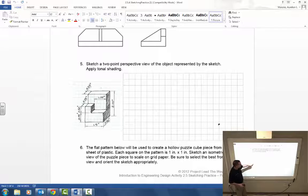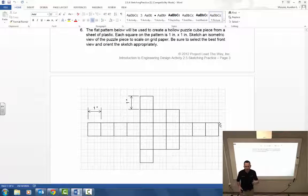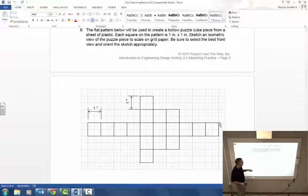And then finally, another kind of pattern. If I were to cut this out and fold it together, what kind of shape would that make? Again, this will be drawn as an isometric, and we'll add the tonal shading.